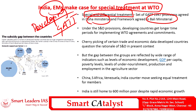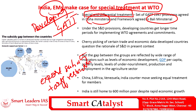According to Special and Differential Treatment, certain developing countries like India are exempted from the same strict trade rules and disciplines that developed countries must follow. For example, developing countries are given longer time periods to phase out export subsidies or tariff restrictions, whereas developed countries must comply within an earlier period. However, the current problem is that developed countries are cherry-picking certain trade and economic data of developing countries and questioning the implementation of this special treatment.